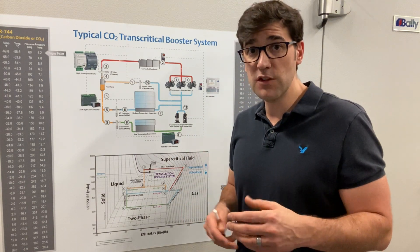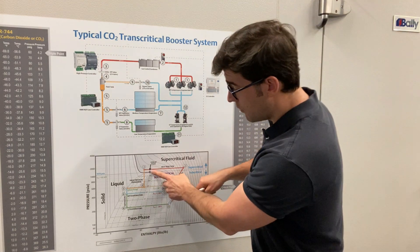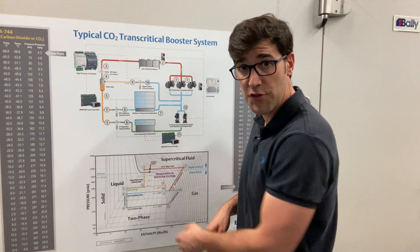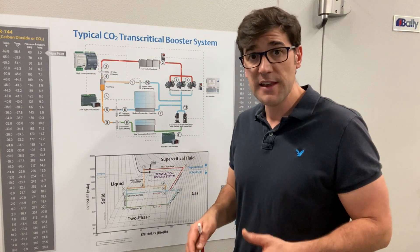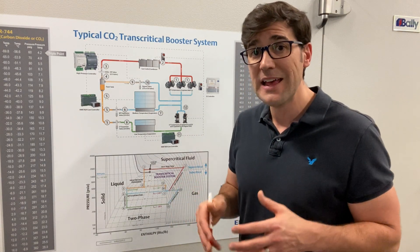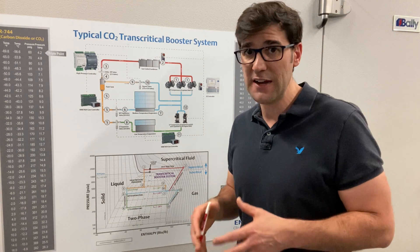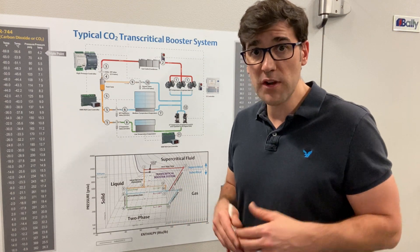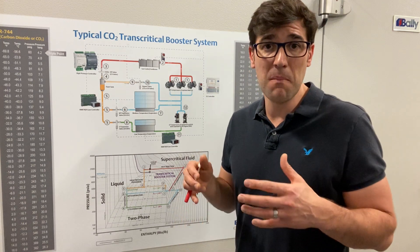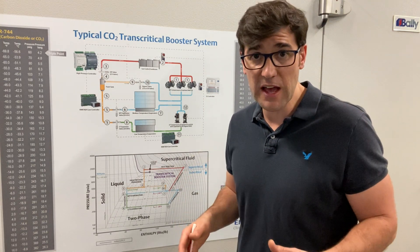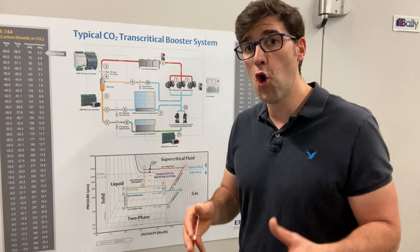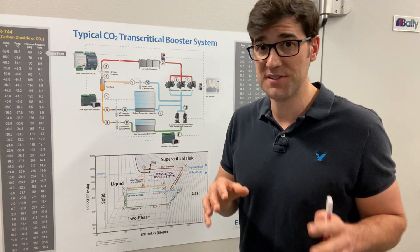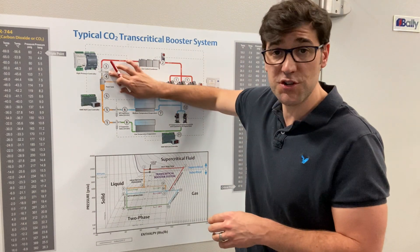The second function is when you're in the sub-critical zone — below the critical point, below 87.8°F or 31°C. In that mode, the valve is maintaining a sub-cooled liquid, about three to five degrees of sub-cooling. The third mode is in the middle of winter when it's minus 20, minus 30, minus 40 outside, and that valve acts like a holdback valve to make sure you can continue to move the CO2 through the system.